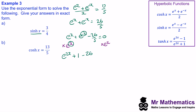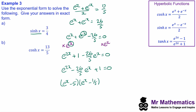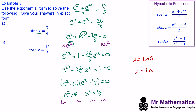We now have e^(2x) − (26/5)e^x + 1 = 0, written in descending powers. This factorises into (e^x − 5)(e^x − 1/5) = 0, giving e^x = 5 and e^x = 1/5. Taking the natural log of both sides: x = ln(5), and x = ln(1/5), which using the power rule of logs equals −ln(5).